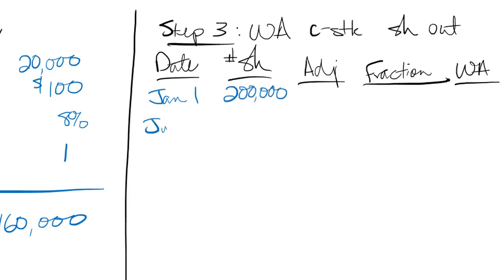On June 1, they issued another 30,000. So 200,000 plus another 30,000 gives me 230. And that's all the information that I have. There's no stock splits or stock dividends. So we don't have to worry about adjustments. I can just jump right to the fraction.